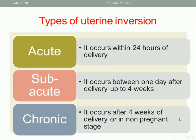The types of uterine inversion: we have acute, sub-acute, and chronic. If inversion happens within the first 24 hours after delivery, it is called acute inversion. If it happens after one day and up to four weeks postpartum, it is called sub-acute. If it happens after four weeks from delivery, or in a non-pregnant state — it can happen at any age, including senile type — this is called chronic inversion.